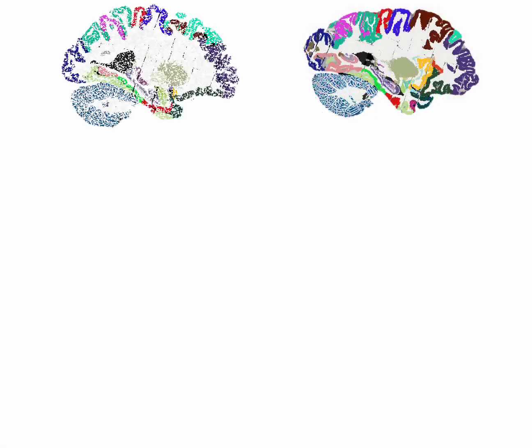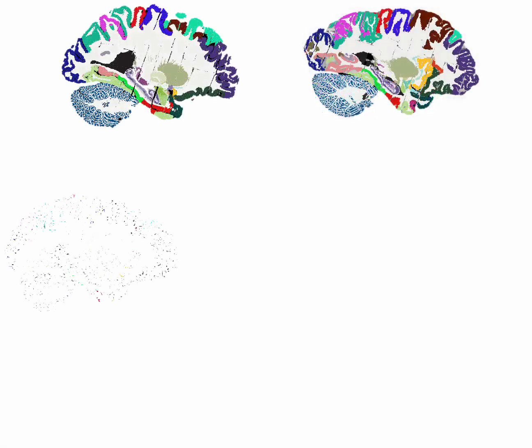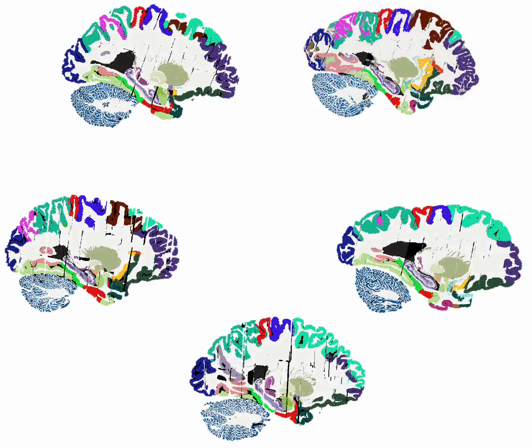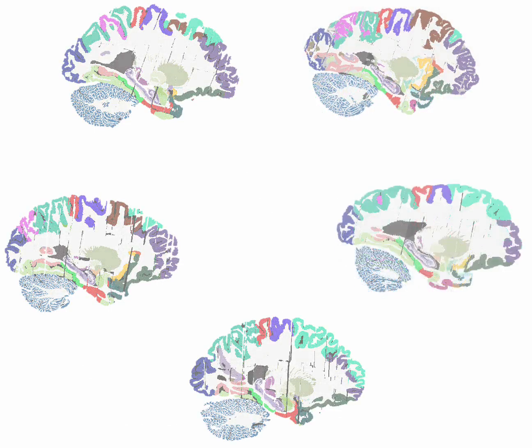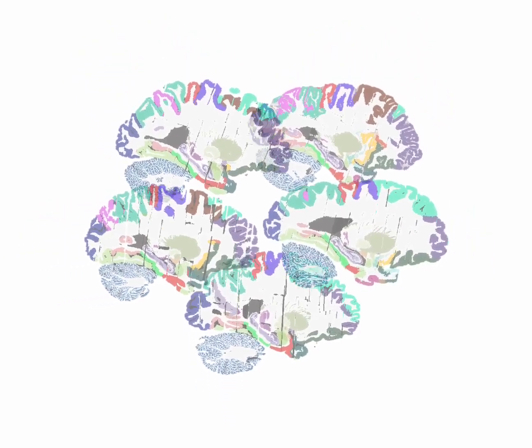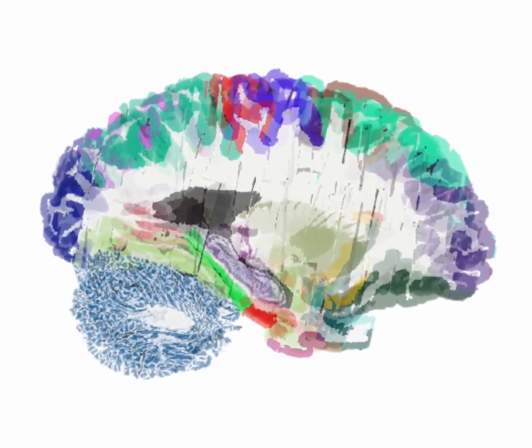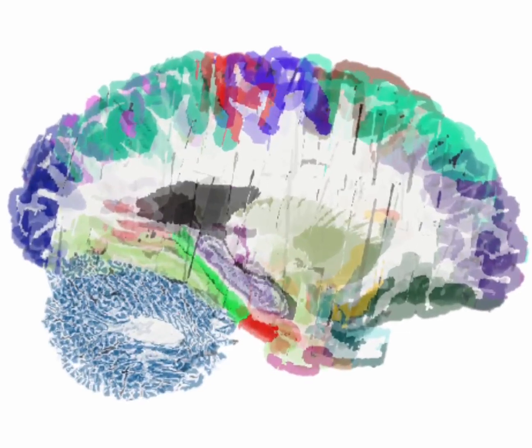The next step is averaging the 3D segmentations of the five cases into our probabilistic atlas. This is achieved by co-registering the cases into a common space, where the labels are merged into the final probabilistic atlas.